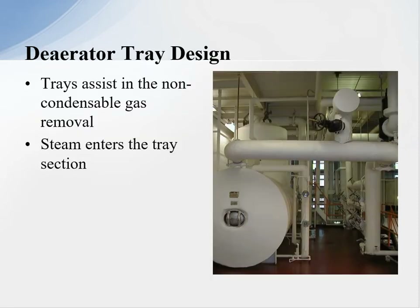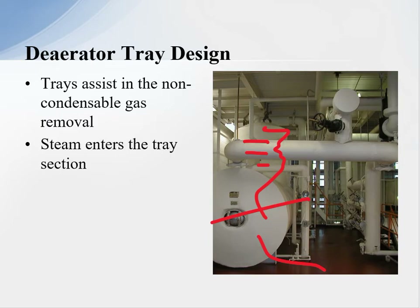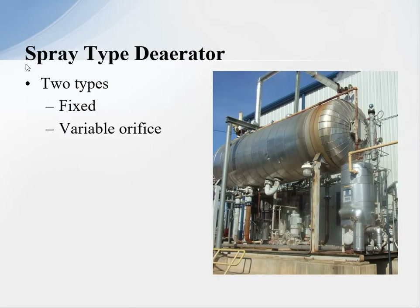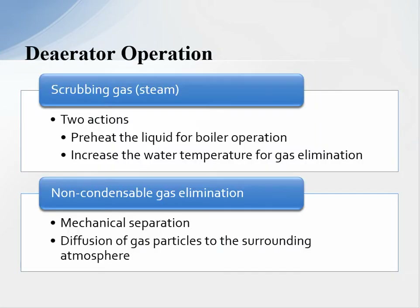On deaerator tray design, trays assist in non-condensable gas removal. The water comes and drops across the trays into the bottom of the storage tank, with feed water below. The spray type comes in two varieties: fixed orifice and variable orifice. Makeup and condensate come in, spray out, hit a diffuser system, and the non-condensable gases are removed. Both types get the dissolved oxygen down to seven parts per billion.